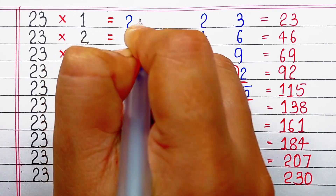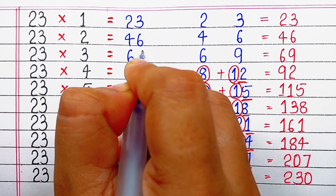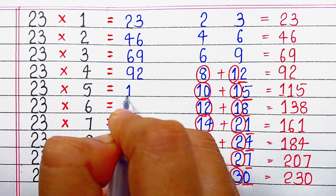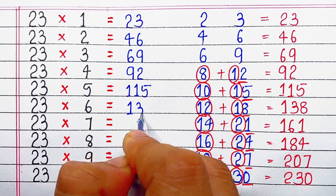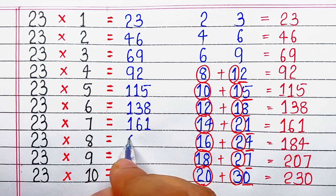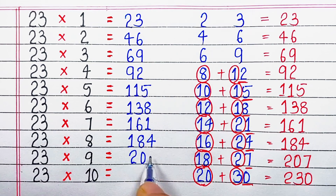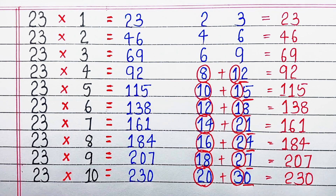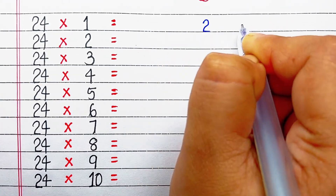With this we have got the multiplication table of 23. So let's start writing: 23 ones are 23, 23 twos are 46, 23 threes are 69, 23 fours are 92, 23 fives are 115, 23 sixes are 138, 23 sevens are 161, 23 eights are 184, 23 nines are 207, 23 tens are 230. Now let's learn the trick for the table of 24.